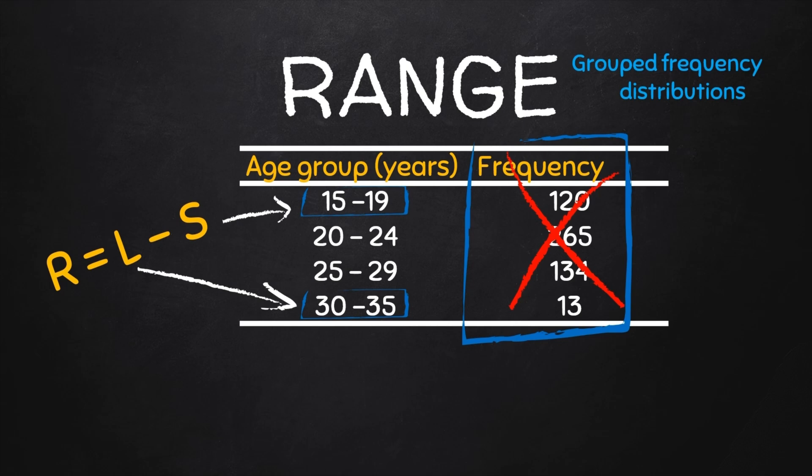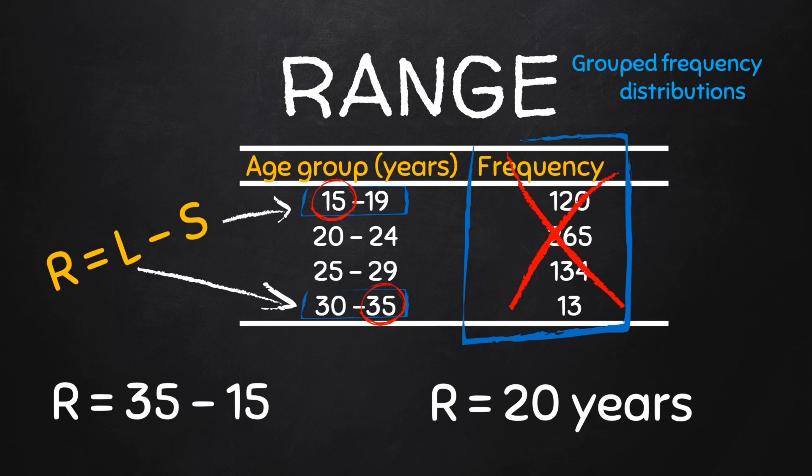So for this example, the upper limit of the largest class, which is 30 to 35, is 35, and the lower limit is 15. The range will be 35 minus 15, and that will give us 20 years.